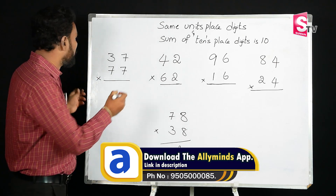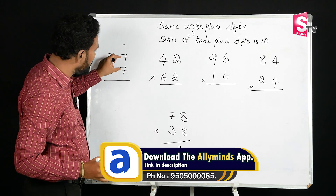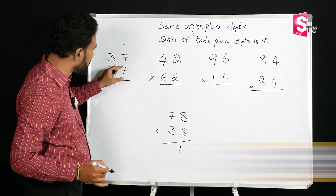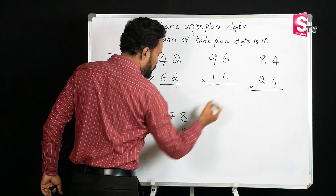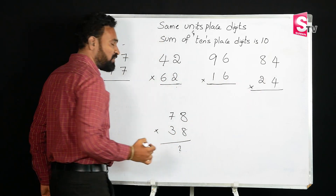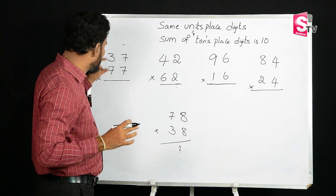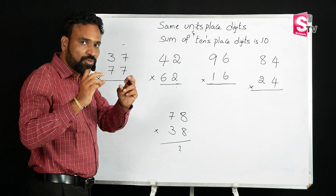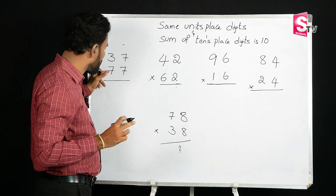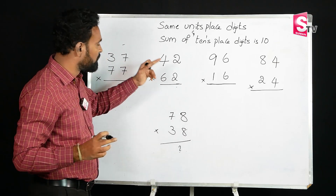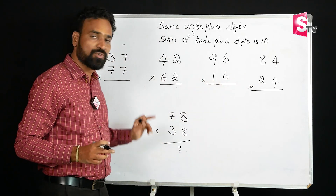Let's go to the conditions. The ones digits must be the same digits — for example, 7 and 7. Then, if you add the tens digits, it will equal 10. For example: 3 plus 7 is 10, 4 plus 6 is 10, 9 plus 1 is 10, 8 plus 2 is 10, 7 plus 3 is 10.